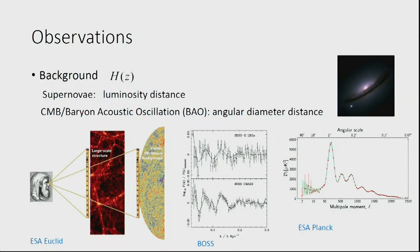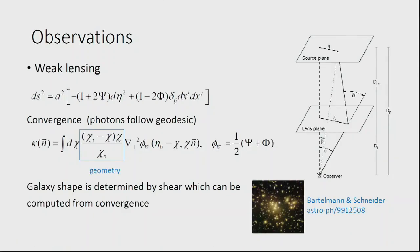What observational probes can we use? For the background, we have supernovae and baryon acoustic oscillations, which measure the background expansion history. For structure formation, we have additional tools. My aim is to make the assumptions very clear — sometimes GR is used in a hidden way in deriving observables, and I want to identify those assumptions.